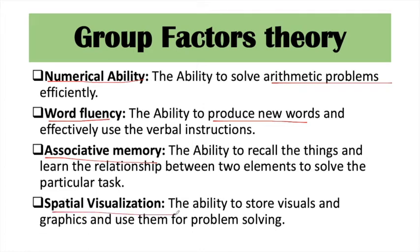Next is spatial visualization — the child's ability to mentally visualize and manipulate objects or space. Thurston says that intelligence is not a single entity, but a combination of seven primary mental abilities, which a child uses effectively in problem solving.